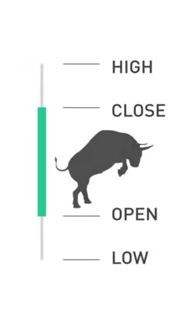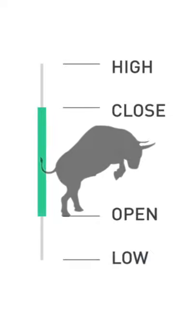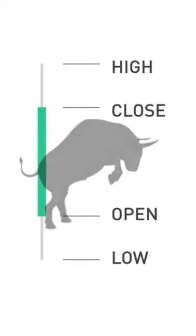A bullish candlestick is green showing that the stock's price has increased. This means the close price is above the open price.